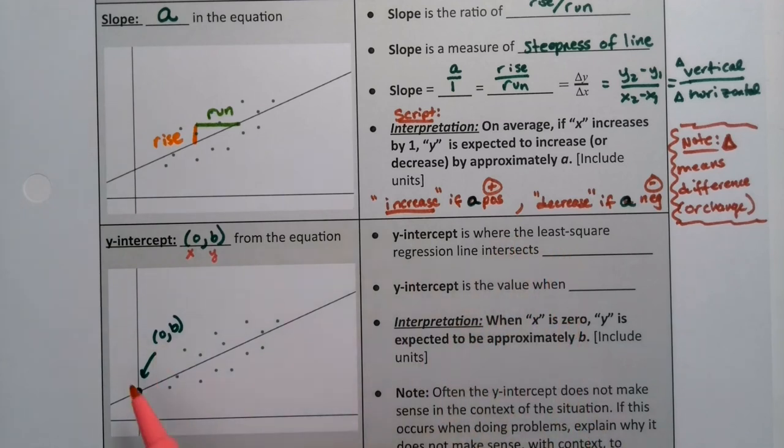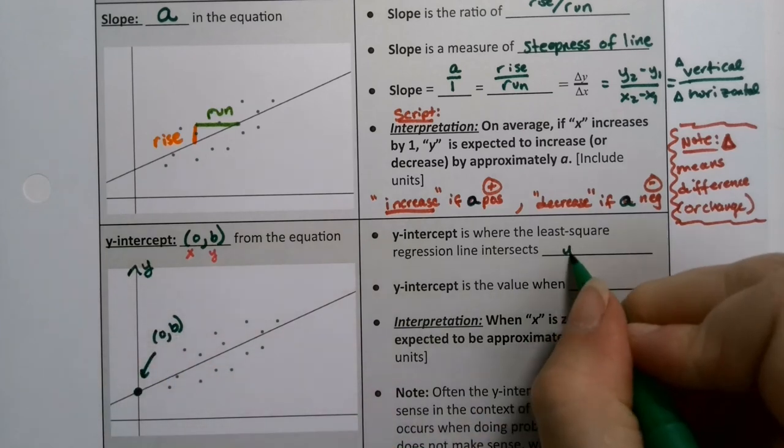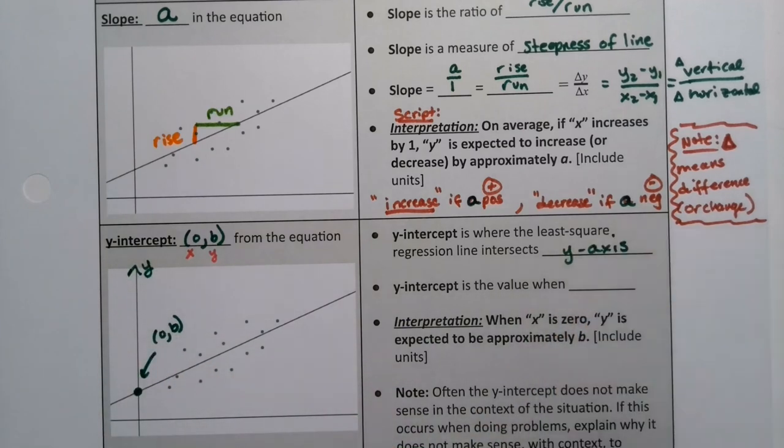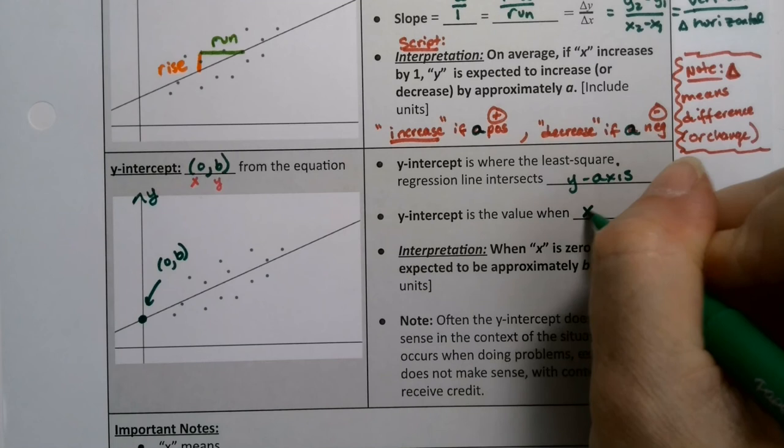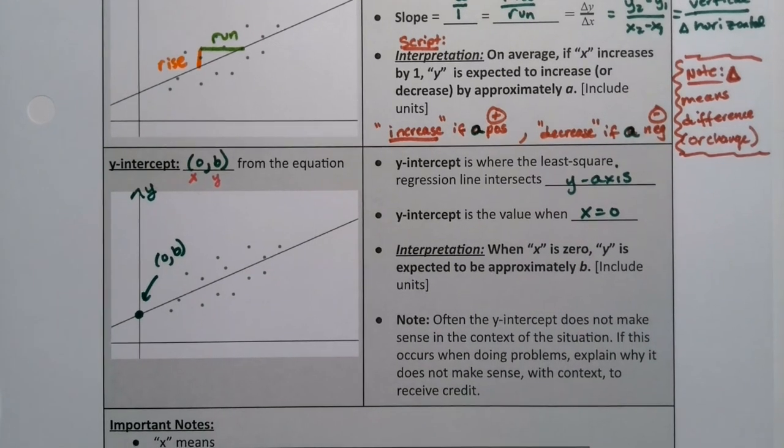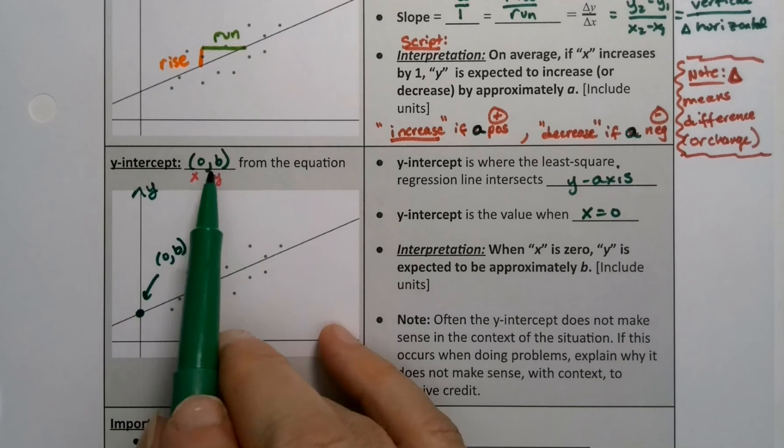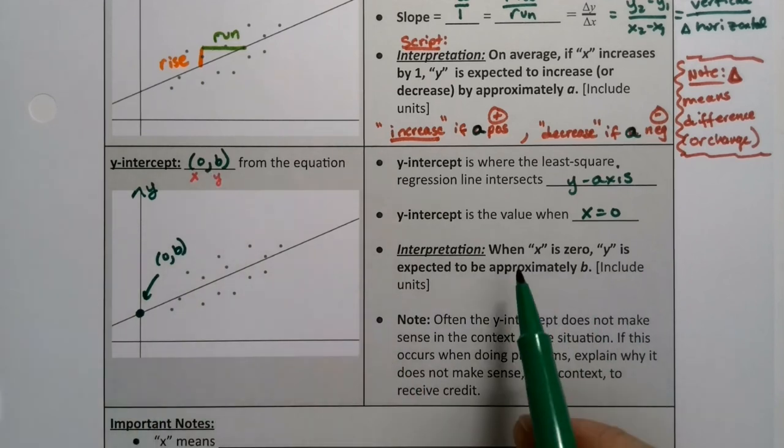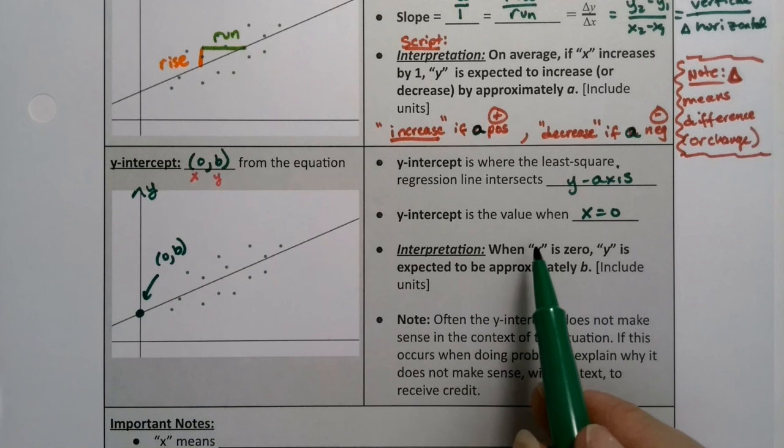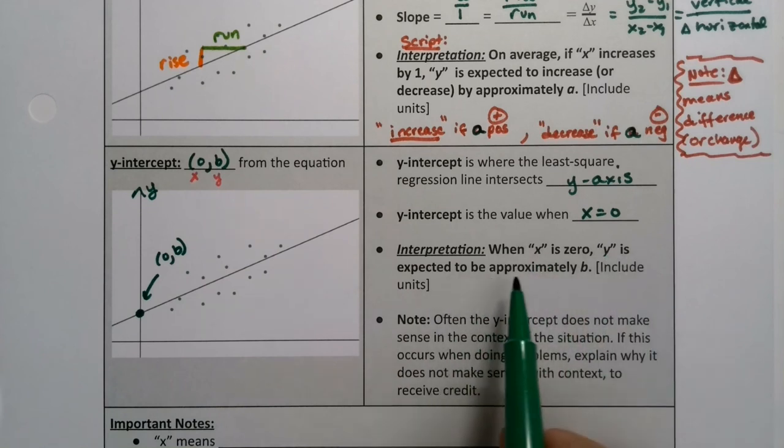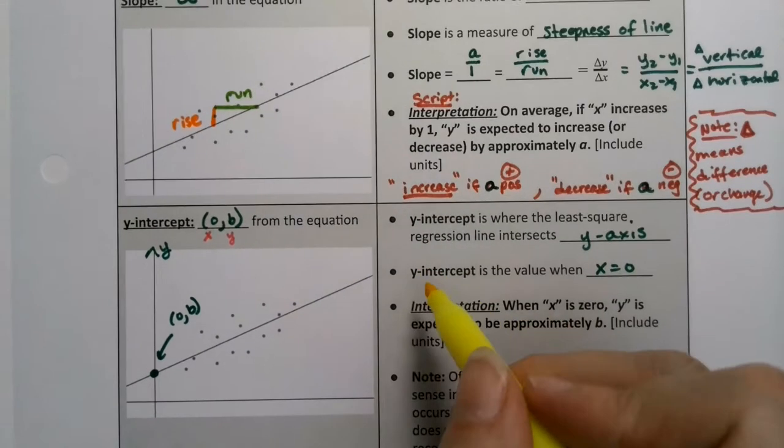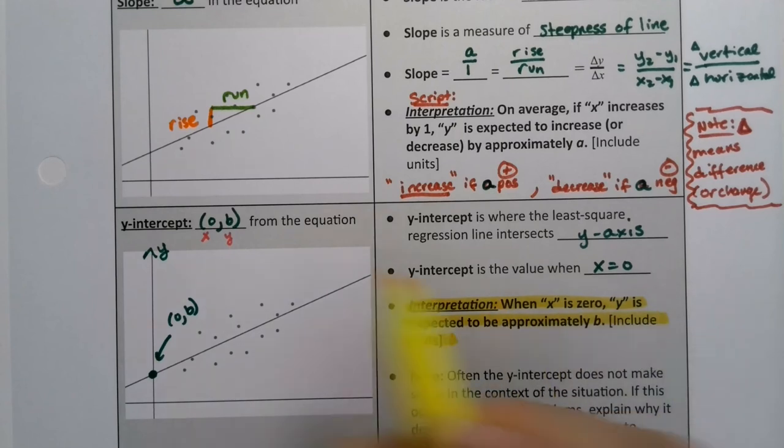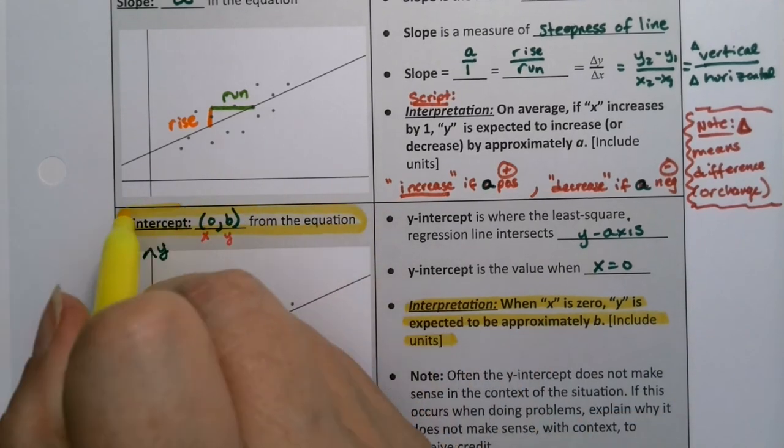So the y-intercept is where the least squares regression line intersects the y-axis. This is the y-axis right here, and it's where it touches that y-axis. It's obviously the value when x is 0. They're trying to get you to notice that that's a point, so 0, b. You'll say, when x is 0 - and again you put in whatever context you have for x - then y, use context for that, is expected to be approximately b. And as always, we include units.